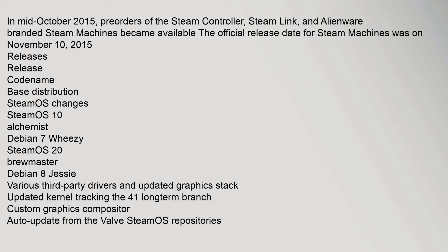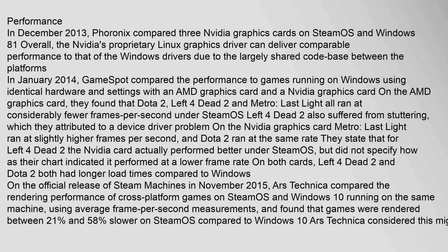In December 2013, Phoronix compared three NVIDIA graphics cards on SteamOS and Windows 8.1. Overall, NVIDIA's proprietary Linux graphics driver can deliver comparable performance to that of the Windows drivers due to the largely shared code base between the platforms. In January 2014, GameSpot compared the performance of games running on Windows using identical hardware and settings with both an AMD and an NVIDIA graphics card. On the AMD graphics card, they found that Dota 2, Left 4 Dead 2, and Metro: Last Light all ran at considerably fewer frames per second under SteamOS.